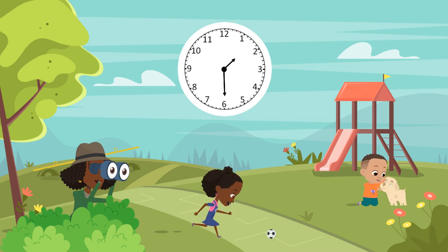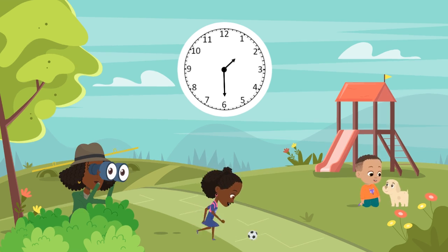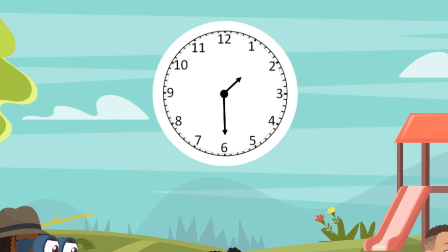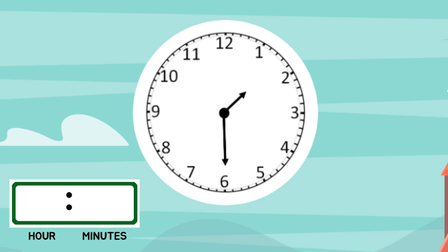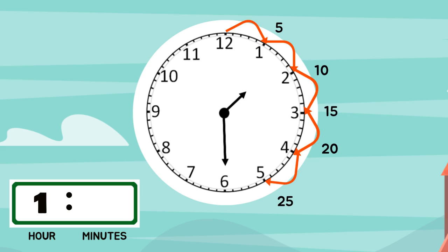Oh, look, there's our first clock. Let's take a closer look. Do you remember what the first step is when telling time? That's right — find the hour. I noticed that the hour hand is between the one and the two. What will the hour be? You got it. The hour is one because the hour hand hasn't made it to the two yet. Now that we know the hour, what's next? We find the minutes. Let's start at 12 and count by fives: 5, 10, 15, 20, 25, 30. The time shown on this clock is 1:30.